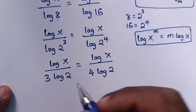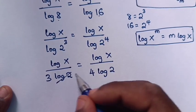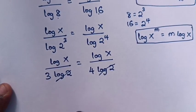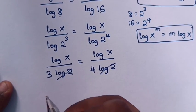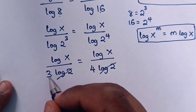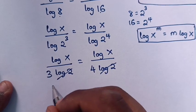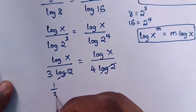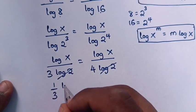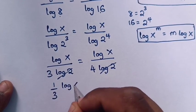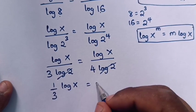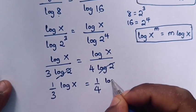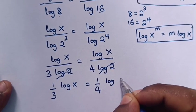Then log 2 is common in both denominators, so log 2 and log 2 will cancel. Our equation will then be 1 over 3 times log x is equals to 1 over 4 times log x.